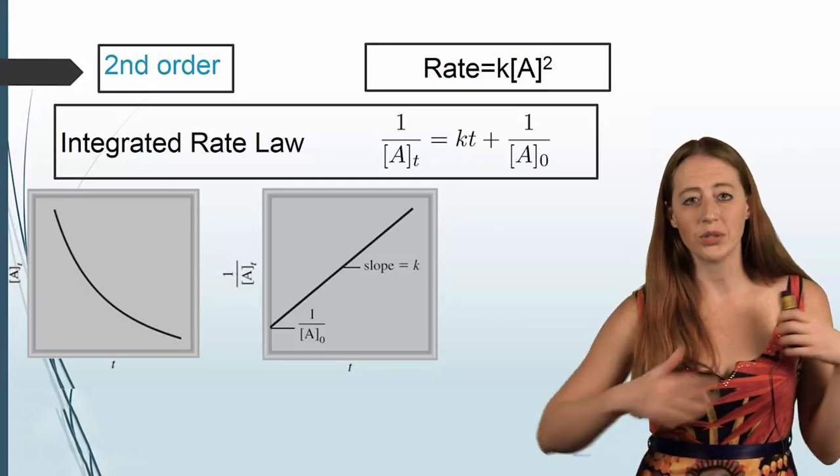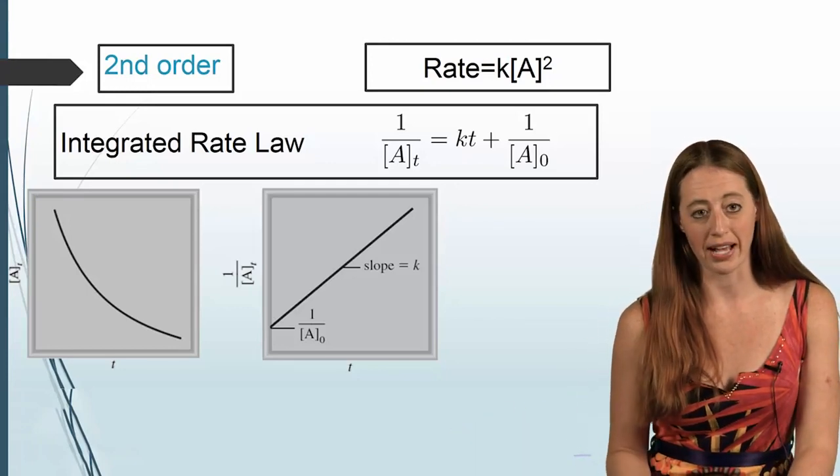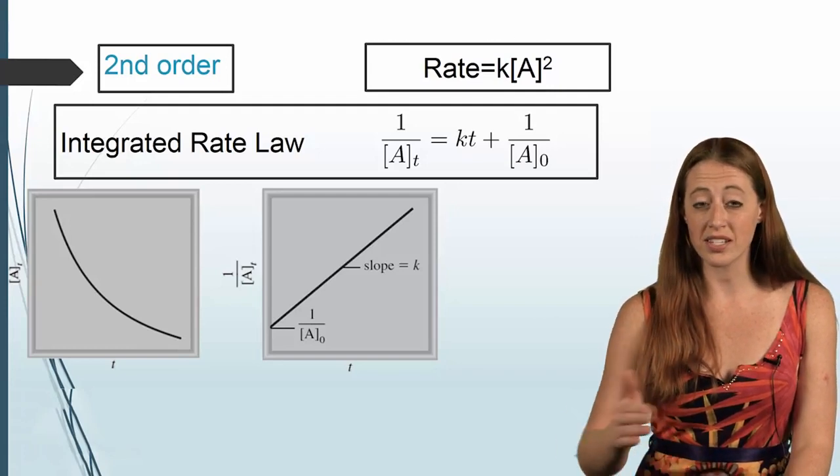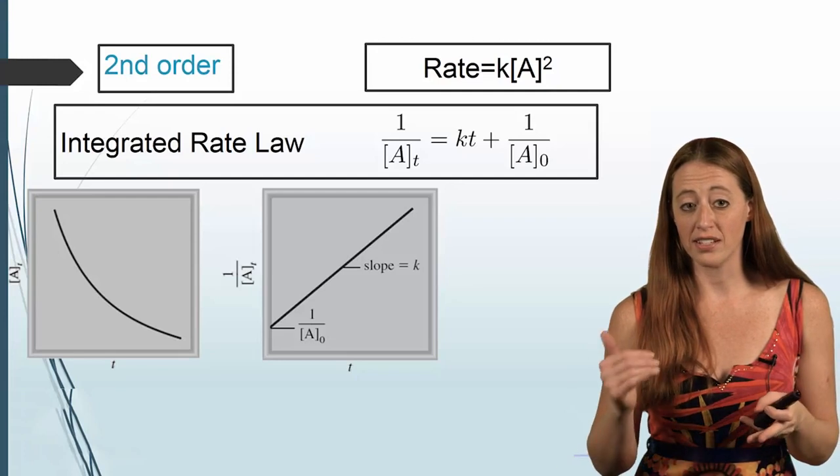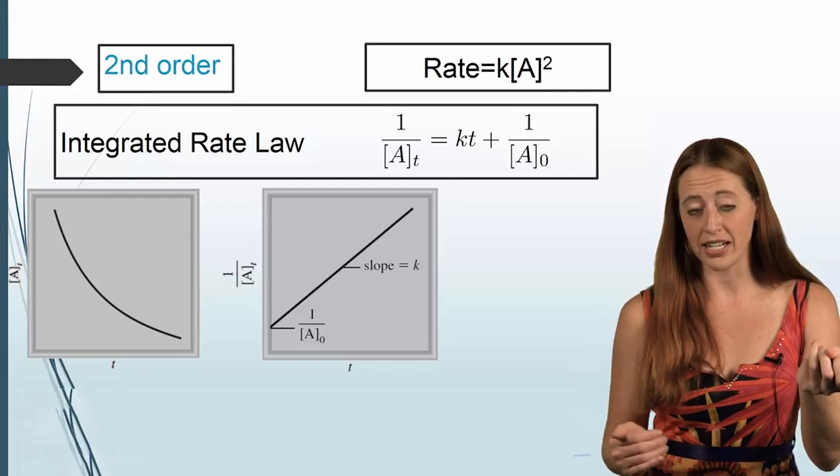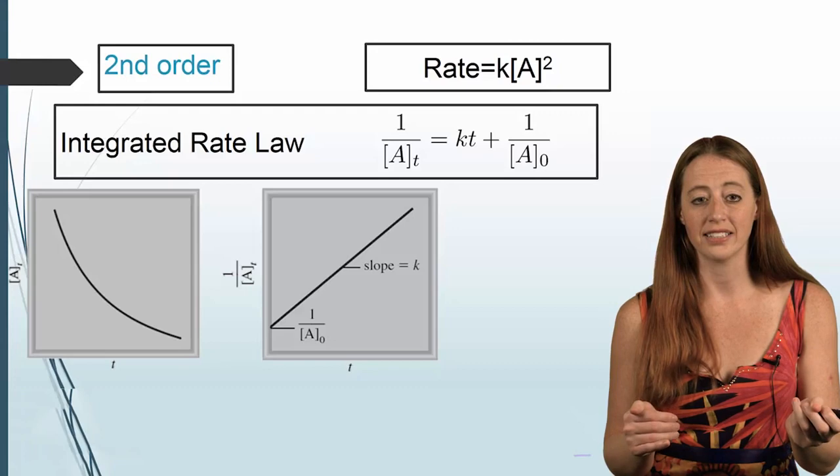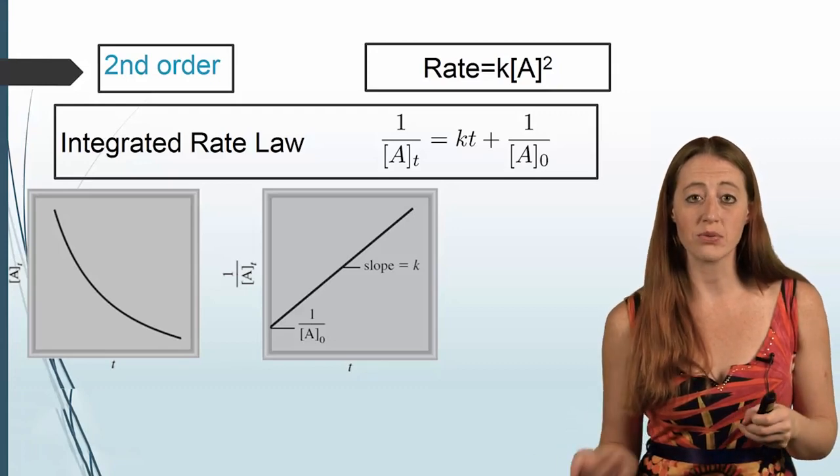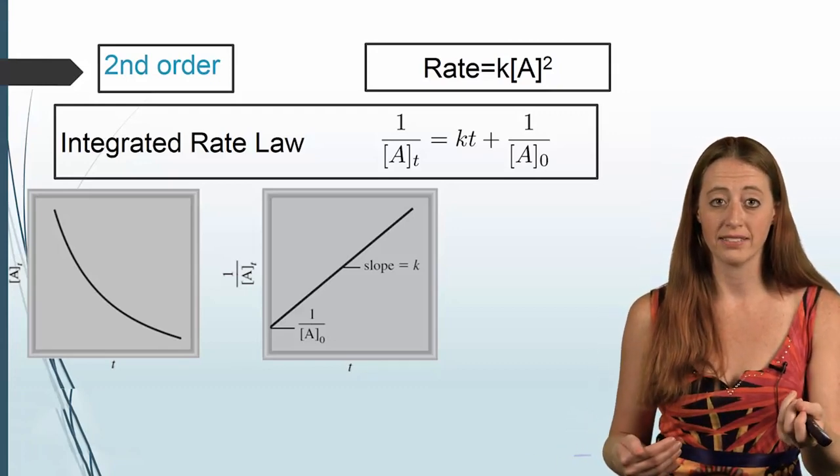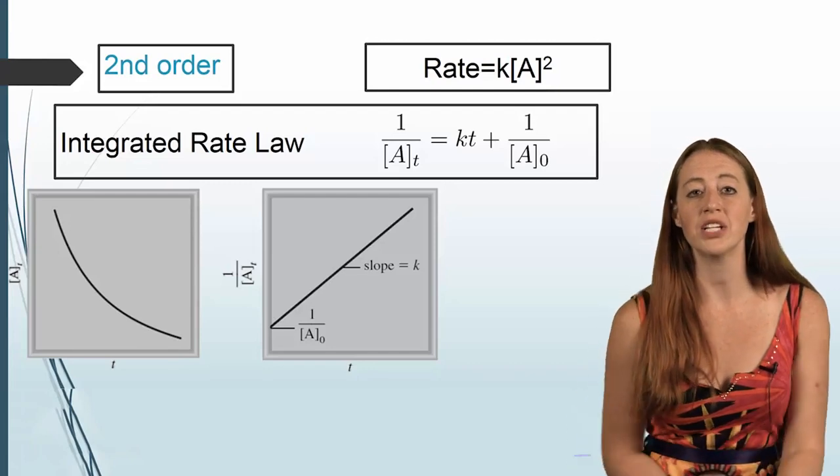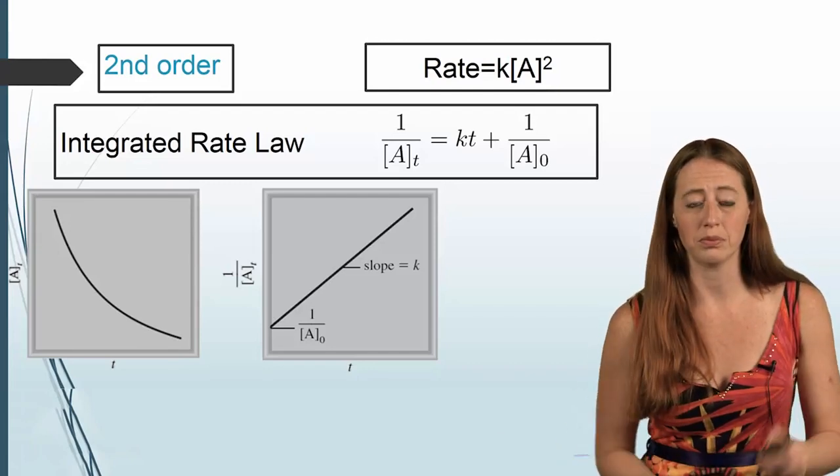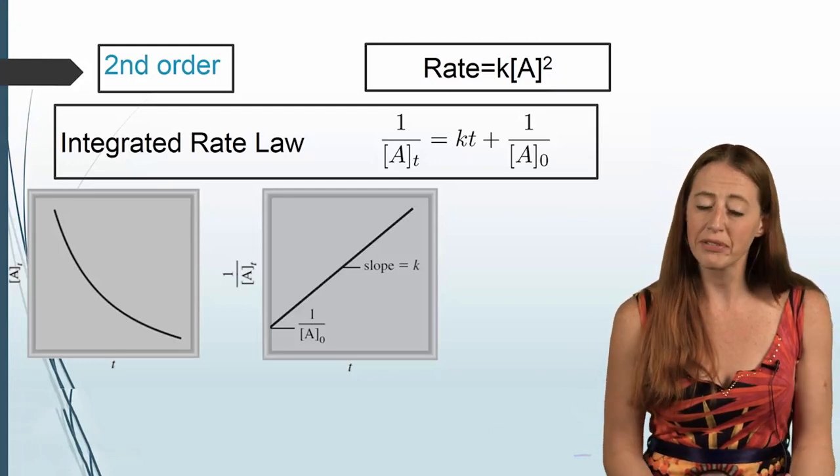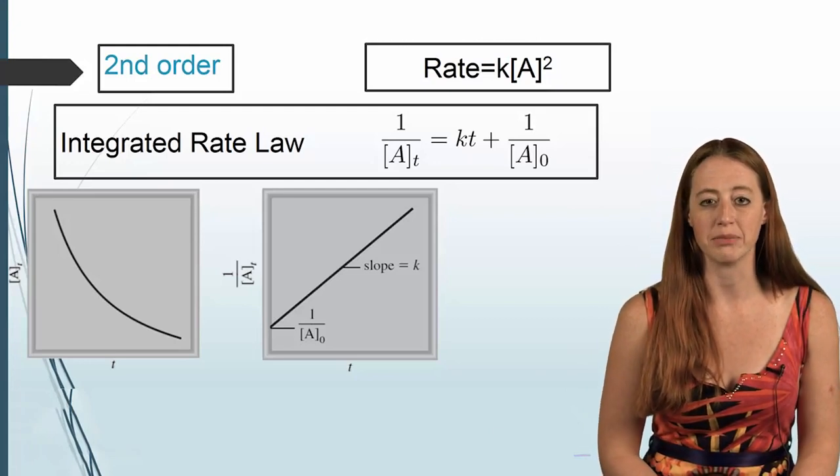So if you were doing this and you didn't know what kind of reaction you had, you could use these graphs to tell you that. Because you could make a graph that T is related to natural log and see if that's linear. Or you could make a graph of T is related to 1 over AT and see if that's linear. And that would tell you what the rate is. We're not going to do that here because we're not going to make the large sets of data. But if you take a lab course, you'll probably end up doing this.